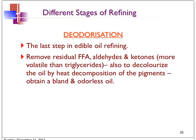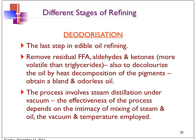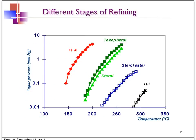The final deodorized oil will be bland and odorless. The process of deodorization is basically a steam distillation done under vacuum. It is very important to get intimate mixing of the steam and the oil, as well as proper vacuum and temperature control. These parameters are important to get efficient deodorization and remove the free fatty acid down to a very low level — less than 0.1%. So how can different components such as free fatty acids, tocopherols, and others be separated from the oil during deodorization?